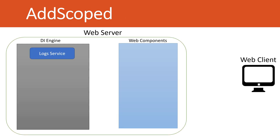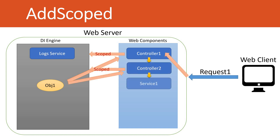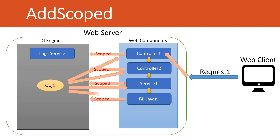The next one is Add Scoped. Let's see what happens in the Add Scoped case. The web client does a request that goes to Controller 1. Controller 1 requests the DI engine, which processes it and creates object one. The same process continues — it behaves similarly to Singleton within a single request. But what is the difference? In Add Scoped, for every request it is similar to Singleton, but it is only per request scope. Within the same request, the same object will be used.